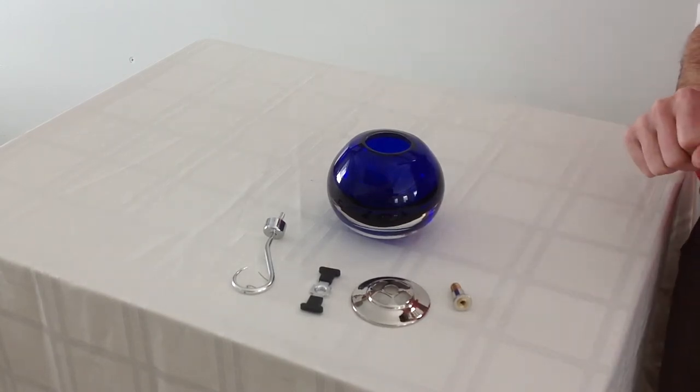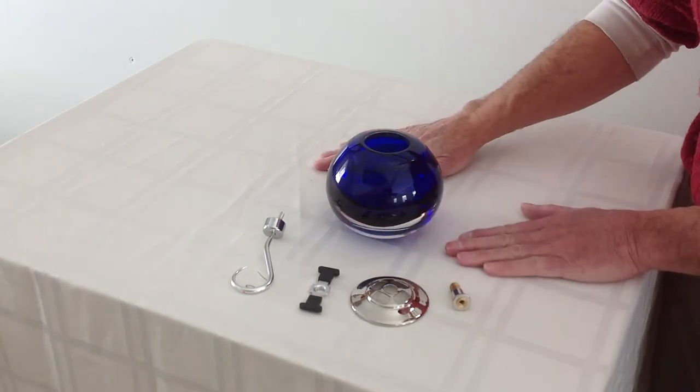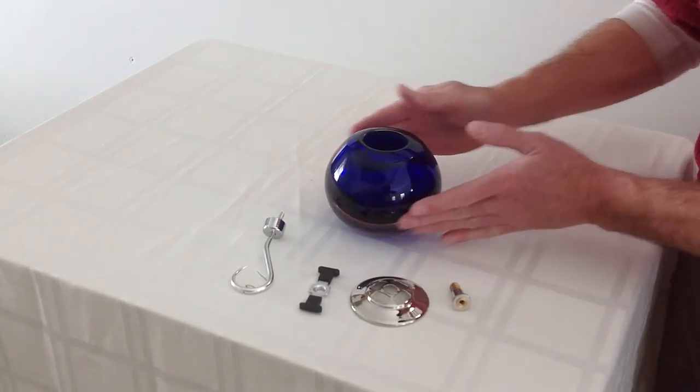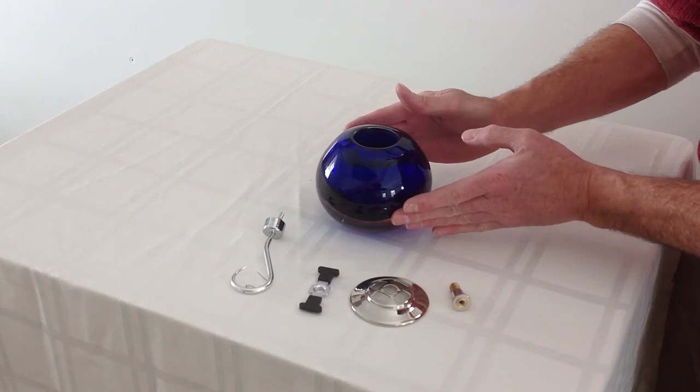We're starting off with a glass base. We suggest you put this on a soft cloth or towel so when you spin the base nothing scratches the bottom.